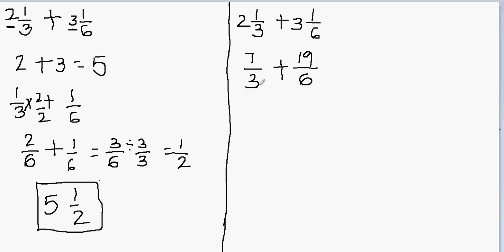We have to make the denominators equal. What do I multiply in this fraction to make the denominator equal to 6? I can multiply 7 over 3 by 2 over 2. Since 2 over 2 equals 1, I haven't changed the value of 7 over 3. Multiplying: 2 times 7 will be 14, and 3 times 2 will be 6. Now I have 14 over 6 plus 19 over 6 — I have like denominators and can add the numerators.